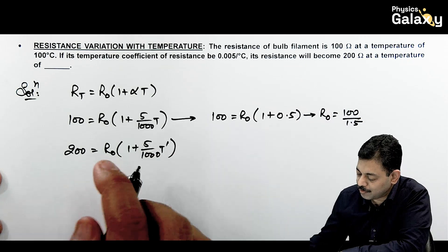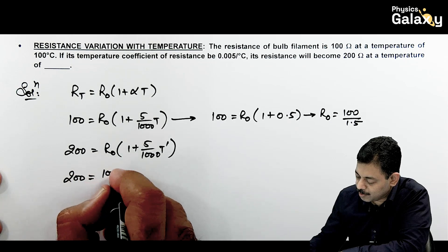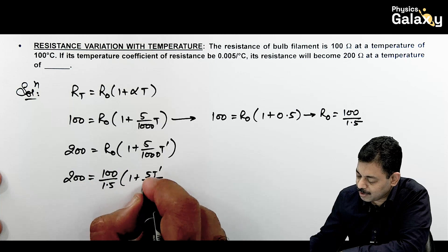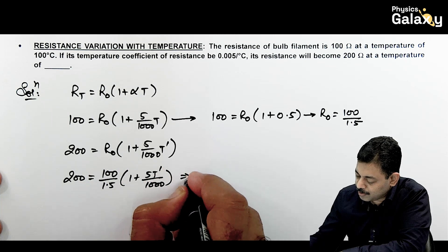Now you can use the value of R0 over here. So this gives you 200 is 100 upon 1.5 multiplied by 1 plus 5 T dash by 1000.